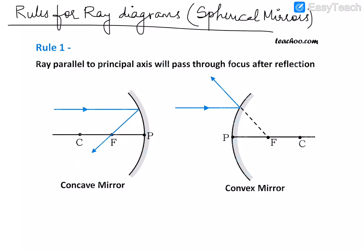This is a concave mirror — concave is like a cave. Opposite to it is convex. A ray which is parallel to the principal axis — remember the line passing from the pole is known as the principal axis — will pass through the focus after reflection. In the concave mirror, the ray actually reflects back and passes through the focus. In the convex mirror case, it appears to be diverging from the focus, so we draw it virtual.